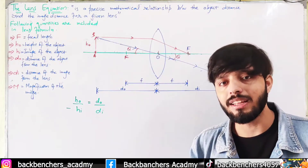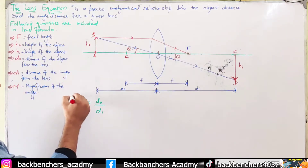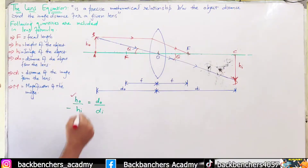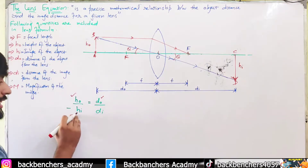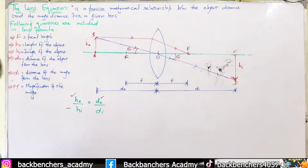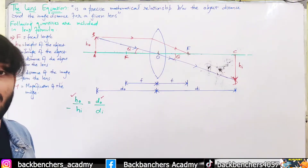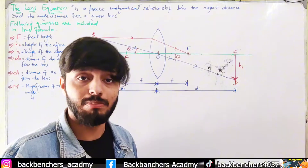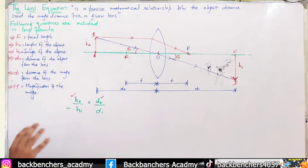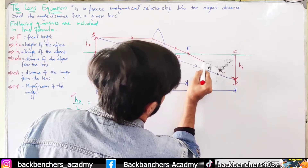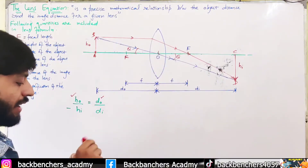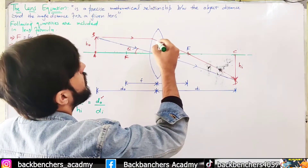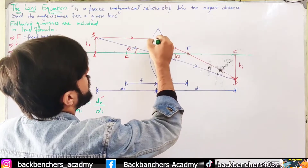Do you think this equation is enough? No, it is not, because in a numerical problem they will give us the height of the object and the distance of the object from the optical center, but we still have two unknowns missing. So we need another set of triangles by which we can manipulate this equation and derive the main lens equation. For this, we will look at the light ray going through the focal point and identify two more triangles.